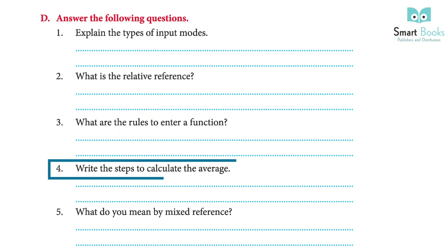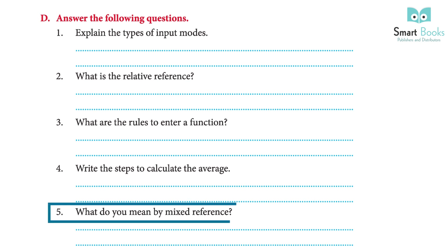4 — Write the steps to calculate the average. Steps: 1 — click on the cell where you want to place the average, e.g., C11 on Sheet 1. 2 — select the Insert Function button on the Formulas tab to open the Insert Function dialog box. 3 — select AVERAGE from the list box and click OK. 5 — What do you mean by mixed references? Answer: A mixed reference is a combination of relative and absolute references, where either a row or column is locked by preceding it with a dollar symbol.